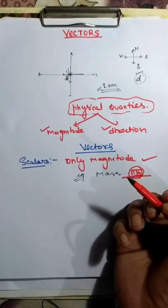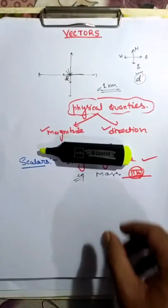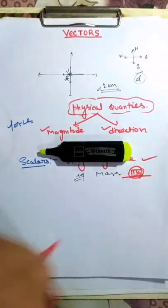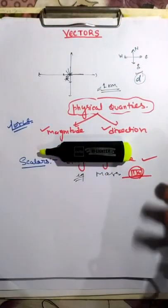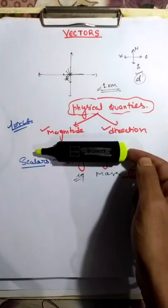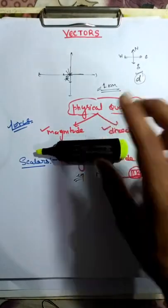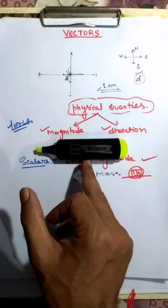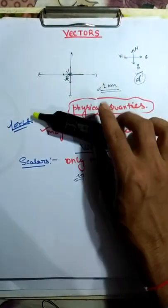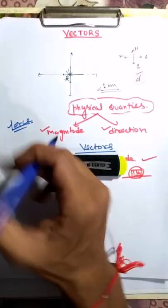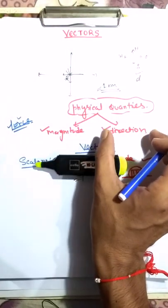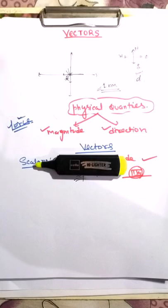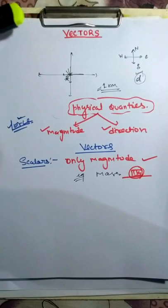One more example of vectors: let's say there is an object and we apply force to it. Force is a vector quantity. If we apply some force in one direction, the object moves to the left. If we apply the same force but change the direction, the object moves in a different direction. So force depends on both magnitude and direction.